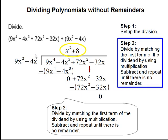And this completes our problem. So when you have this polynomial divided by this polynomial, your answer is going to be x² + 8.